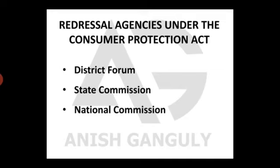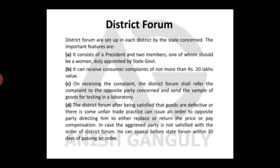The act provides for the setting up of a three-tier quasi-judicial system. We are going to discuss the redressal machinery or redressal agencies. As you can see, there are three types: District Forum, State Commission, and National Commission — similar to how the judicial system has a district court, high court, and Supreme Court.